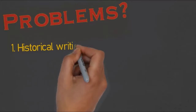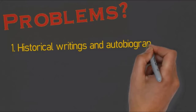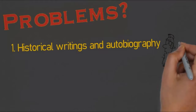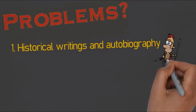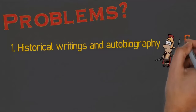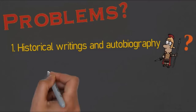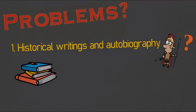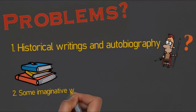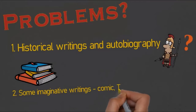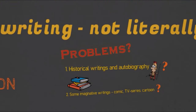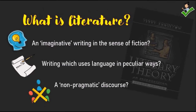What are the problems with this first definition? The first problem is that some historical writings and autobiographies are considered literature — for example, Clarendon's 'History of the Rebellion' and Bunyan's spiritual autobiography. These writings were real and based on reliable facts. The second problem is that some writings based on imagination, like comic books, TV series, and cartoons, also qualify — so are they literature? These are the problems of the first definition.